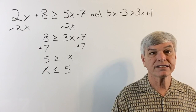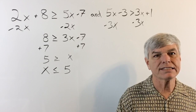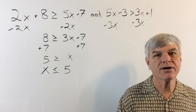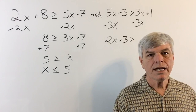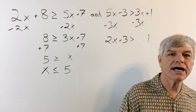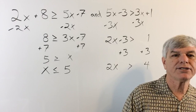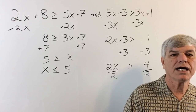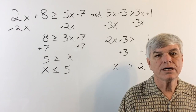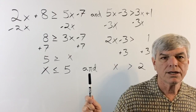Now let's work on the second equation. Bring x's over to the left-hand side so they end up positive, then bring all units over to the right-hand side. Divide both sides by 2 to isolate x — 4 over 2 is 2. And don't forget to bring the AND down.